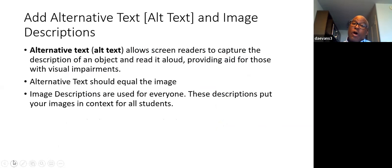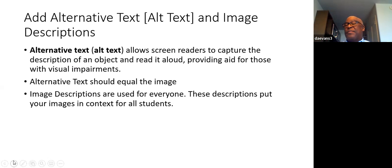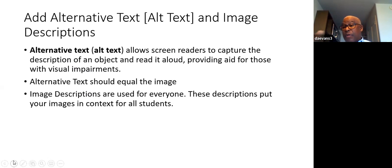Another big one is alternative text and image descriptions. Alternative text allows screen reader users to know that there's a picture and what it contains. I'd argue that we use images for three reasons in higher education: they're either decoration — just there to pretty things up — they're an example of something, or they're actual content.